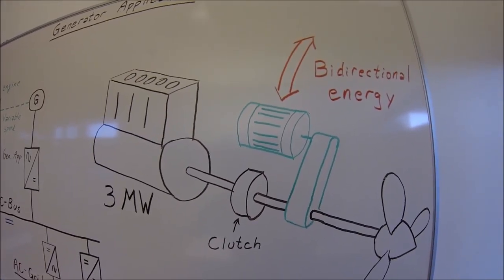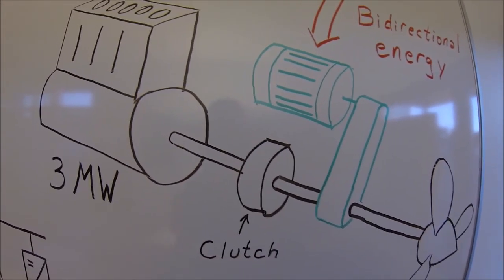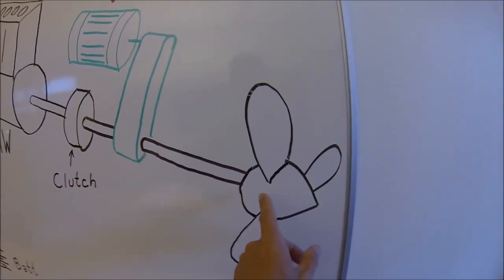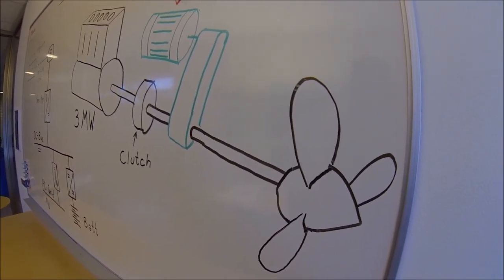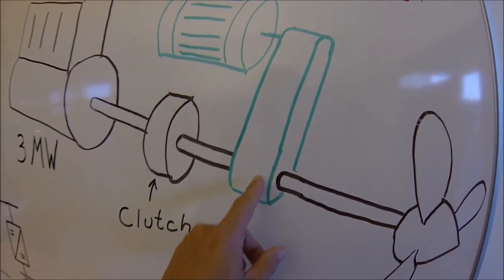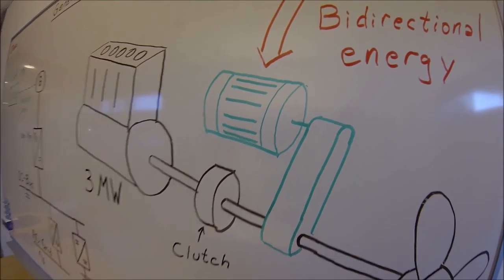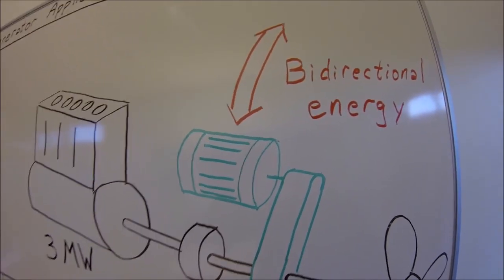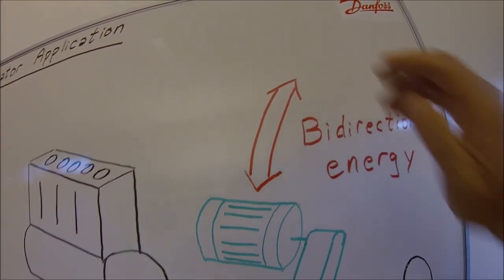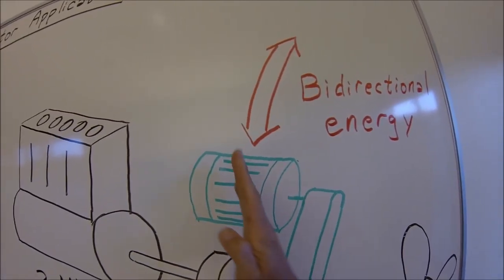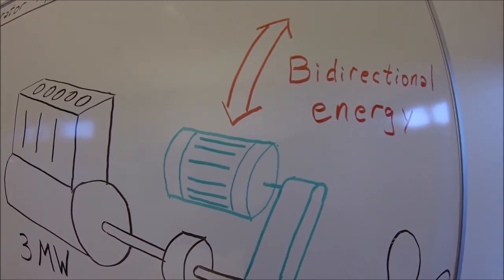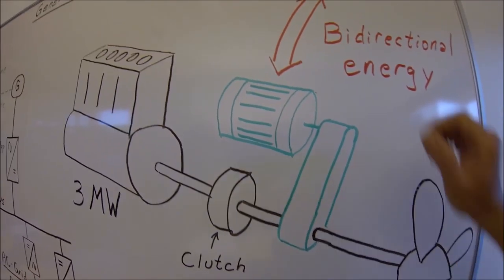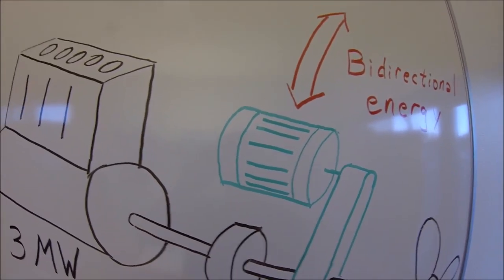Typical installations are shaft generators. It could be a big diesel engine on a ship which drives the propeller shaft and the main propulsion units. There could be a generator connected to the shaft, and this shaft generator can with this application be used bi-directionally. That means you can extract energy from the generator, but you could also add mechanical power to the shaft by using the generator as a motor.